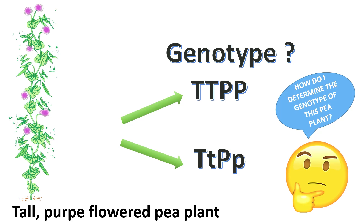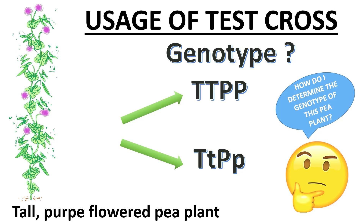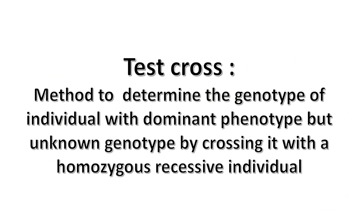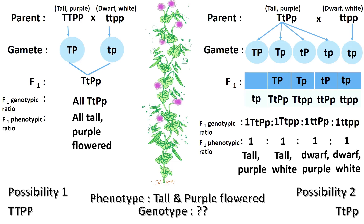You guessed right — by using test cross. Just like what we learned in monohybrid cross, test cross refers to a method used to determine the genotype of an individual showing dominant phenotype but unknown genotype, by crossing it with a homozygous recessive individual. Compare these two possibilities.